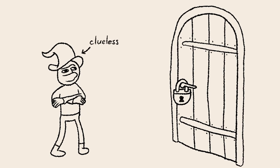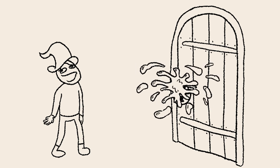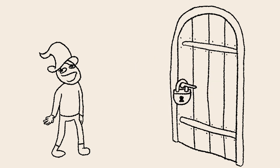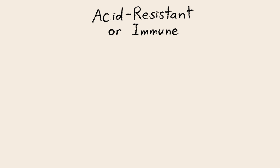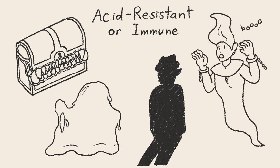Note that this particular acid only targets creatures — it does not affect objects. Also be aware that acid is generally ineffective against naturally acidic creatures such as mimics and oozes, as well as incorporeal creatures such as ghosts and shadows.